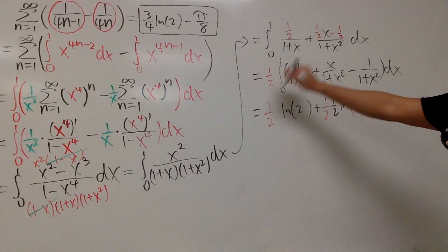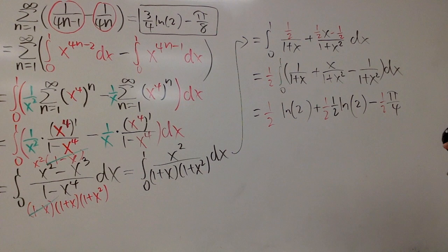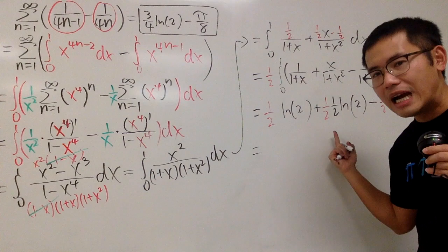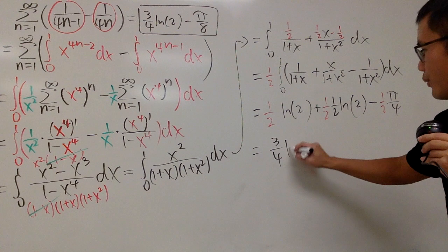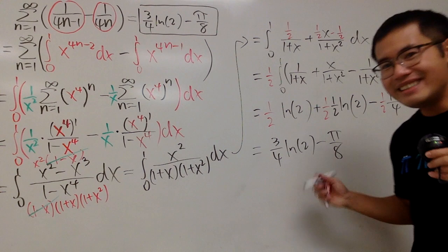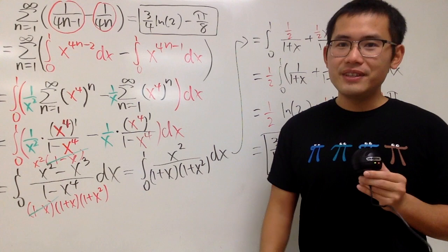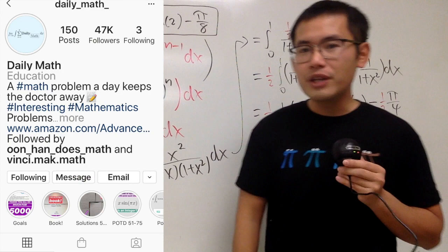Now have a look: 1 half plus 1 fourth both have ln 2, so those two terms give us 3 over 4 ln 2. And lastly, minus pi over 8. Very, very good. Hopefully you guys liked this video. If you enjoyed this question, I think you will like the book as well. Go ahead and check that out — the link will be in the description. Thanks to Daily Math for introducing me to his book. I enjoyed it very much.